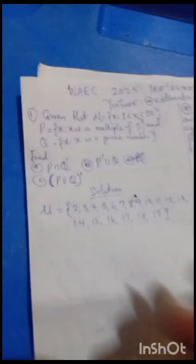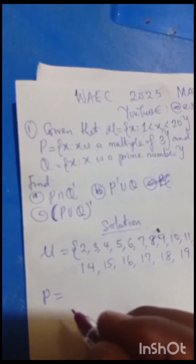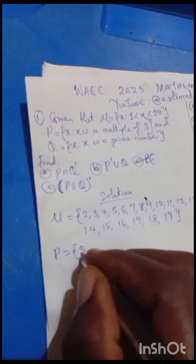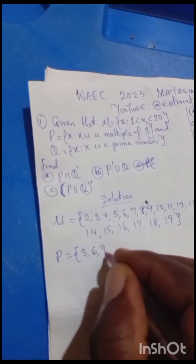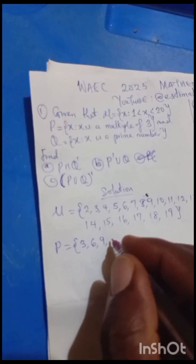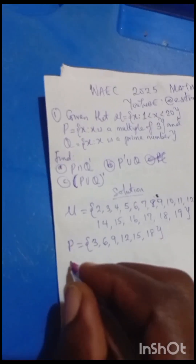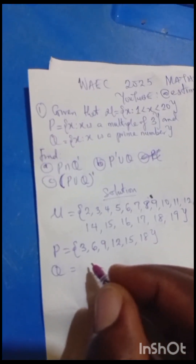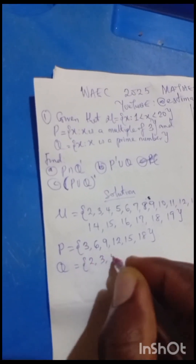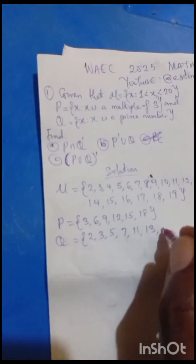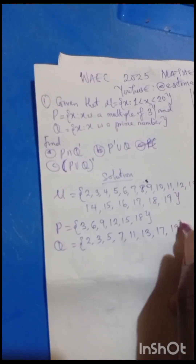Now, P is defined as S such that S is a multiple of 3. The multiples of 3 in this universal set are: 3, 6, 9, 12, 15, and 18. And for Q, those that are prime numbers: we have 2, 3, 5, 7, 11, 13, 17, and 19. These are the prime numbers. We now have the multiples of 3 and we have the prime numbers.